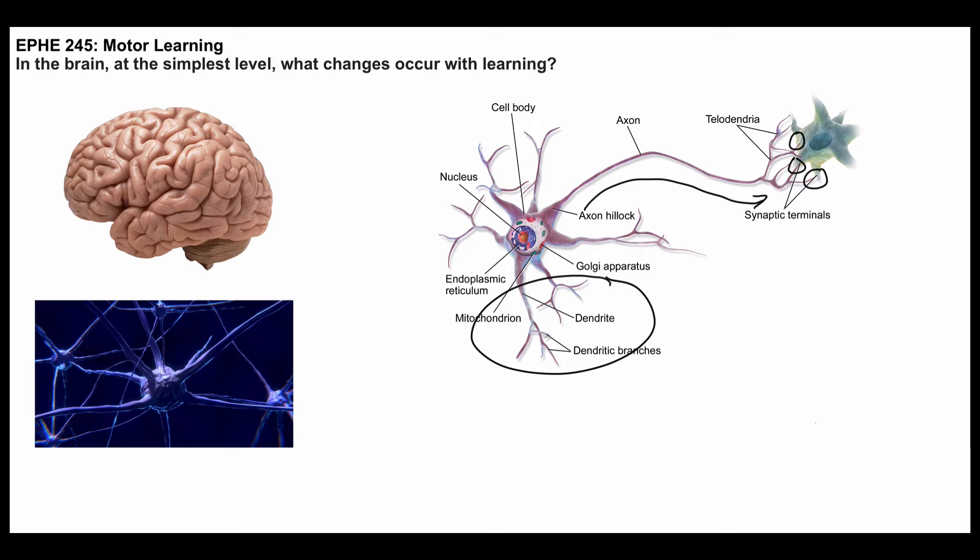It releases neurotransmitter, which then binds on the postsynaptic neuron. Guess where it's binding? It's binding at dendrites. And when it binds, it generates an electrical signal, which in turn goes back to the cell body.